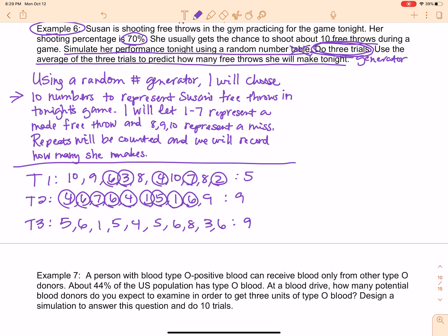So in my three trials I got 5, 9, and 9, and then of course I am told to use the average of the three trials to predict how many free throws she'll make tonight. So I'm going to take 5 plus 9 plus 9 and I'm going to divide that by 3. So 9 and 9 is 18, 18 plus 5 is 23. So 23 divided by 3 is 7.6.